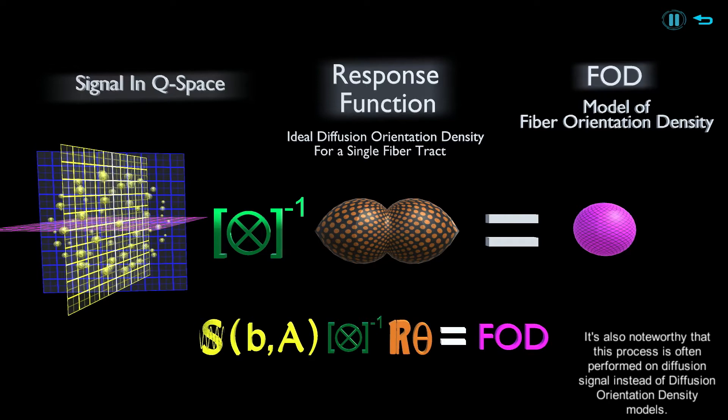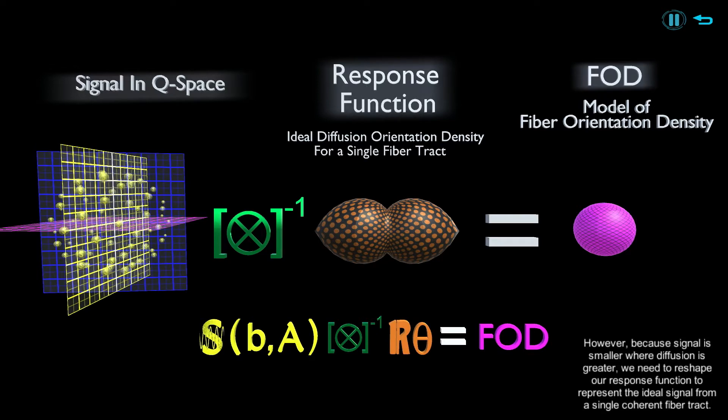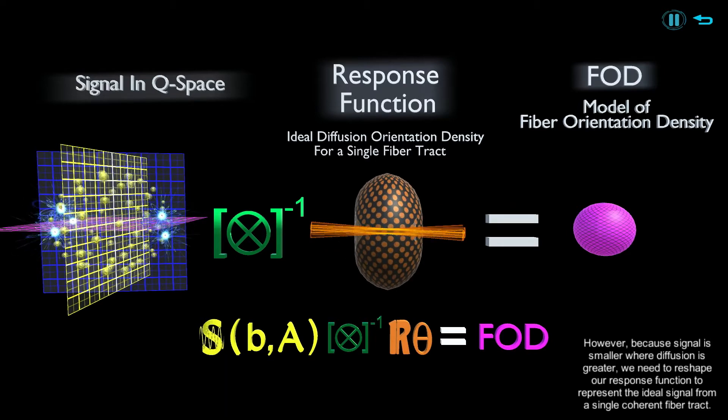However, because signal is smaller where diffusion is greater, we need to reshape our response function to represent the ideal signal from a single coherent fiber tract.